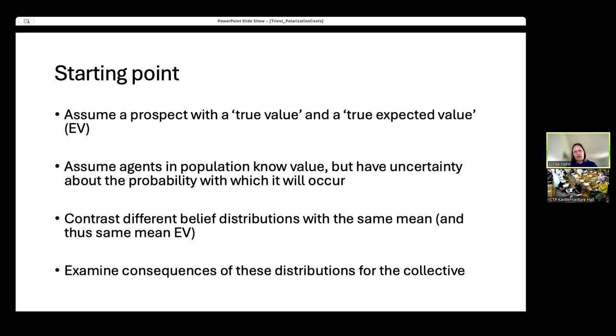There's going to be a particular setup here. In that setup, there's going to be a prospect with a true value and a true expected value. I'm going to assume agents in the population know that true value, but they have uncertainty about the probability with which it will occur. Then I'm going to contrast different belief distributions that all have the same mean and examine the consequences for the group.